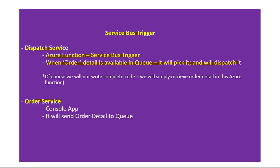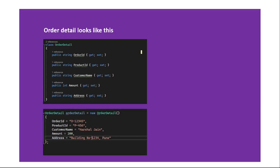The order service will send order details to the queue. We will create an instance of a C# class called Order, serialize it, and send it to the queue. The order detail will have these properties: order ID, product ID, customer name, amount, and address.